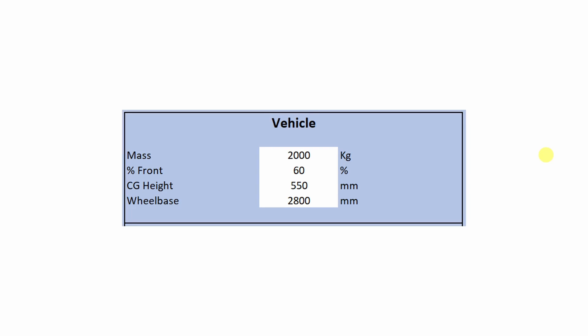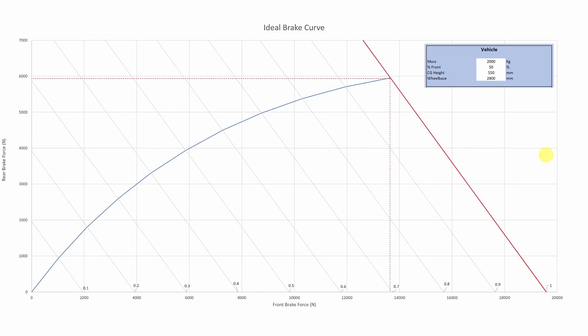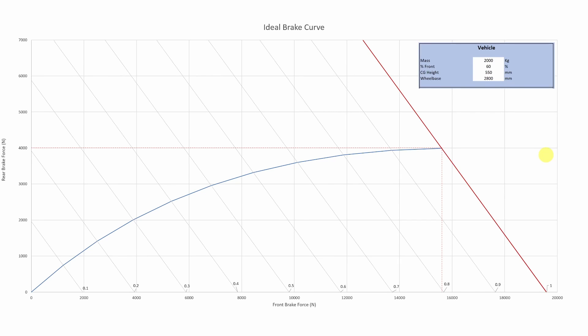Now, what if we change the weight distribution? We had 50% front weight before — let's change that to 60%. See how the shape of the curve has changed quite drastically. If we go back to the 50% weight distribution case, we see that on the surface with a friction coefficient of 1, we could get almost 6,000 N of stopping power from the rear axle, and we only needed about 13,500 N from the front axle. If we now go back to the 60% weight distribution car and look at the same friction coefficient line, we see that the rear axle can only give us 4,000 N of stopping power, and we need about 15,500 N from the front axle. This again makes perfect sense, since we have so much more weight sitting on the front wheels right from the start — we just can't get as much stopping power from the rear axle and need to ask a lot more from the front.